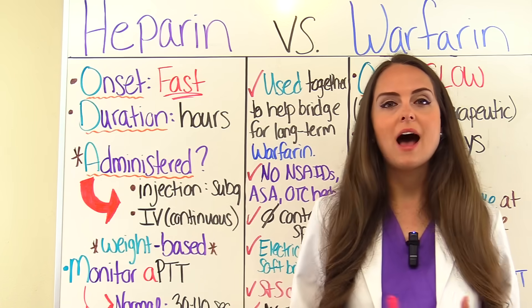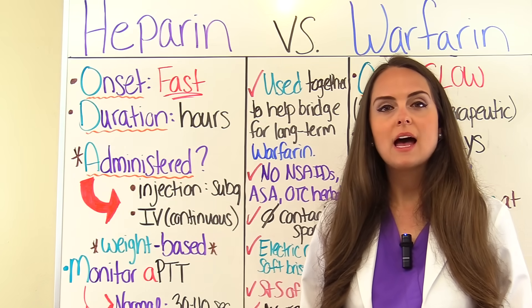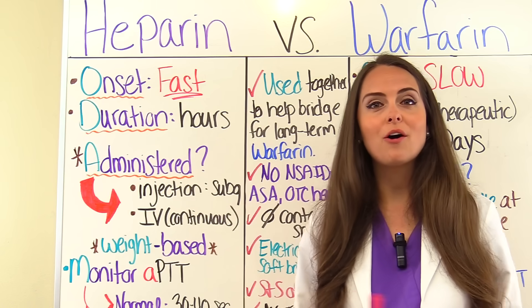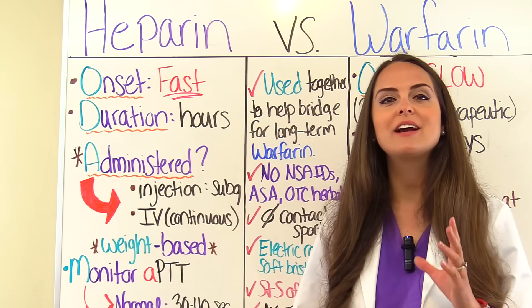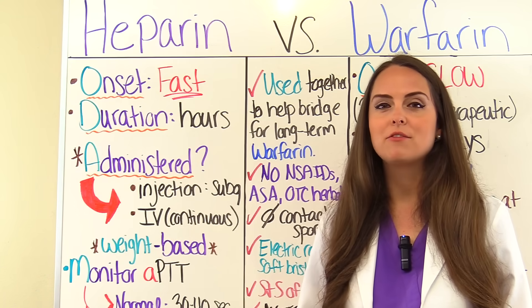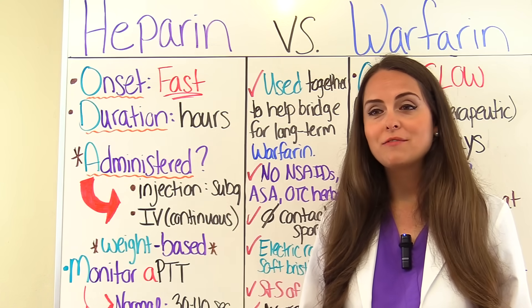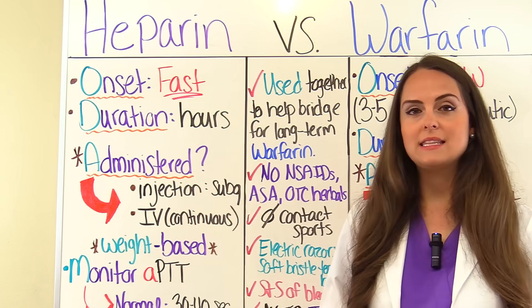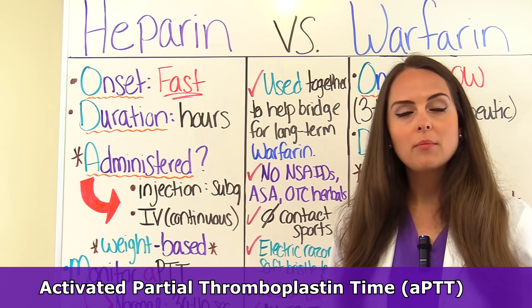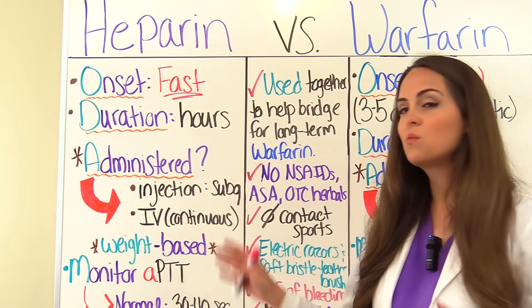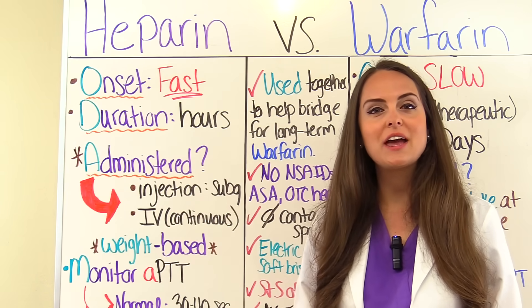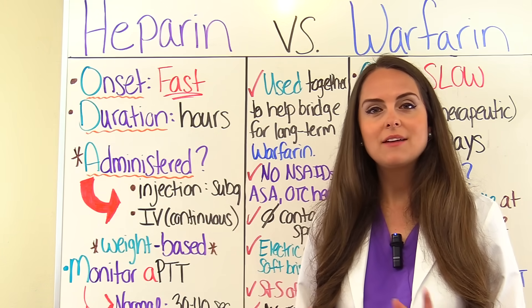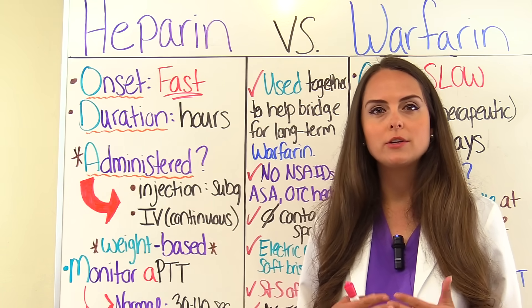Heparin can also be administered IV intravenously, many times through a continuous IV infusion. If your patient is on this, they'll be on a heparin drip protocol with very specific guidelines on how you titrate that drip — increasing the drip, possibly giving a bolus, or turning the drip off and decreasing the rate. It all depends on the lab value called the APTT, the activated partial thromboplastin time. This medication is weight-based, so always make sure you have a current and accurate weight on your patient before starting heparin.